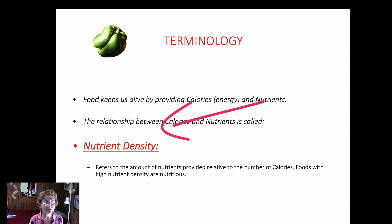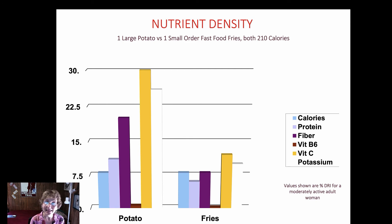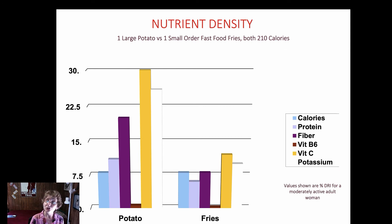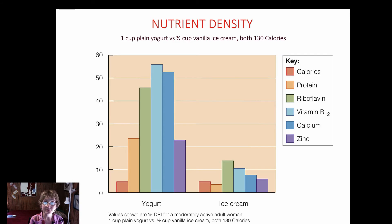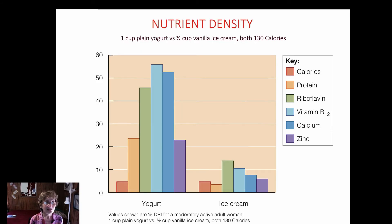The relationship between calories and nutrients is called nutrient density, which refers to the amount of nutrients provided relative to the number of calories. Foods with high nutrient density are more nutritious. For example, if we compare a large potato to a small order of french fries — both 210 calories — the baked potato is more nutrient-dense. That doesn't mean you should never have french fries. Of course you should. Remember, it's the dose that makes the poison. Similarly, a cup of plain yogurt compared to a half cup of vanilla ice cream — both 130 calories — the yogurt is more nutrient-dense.